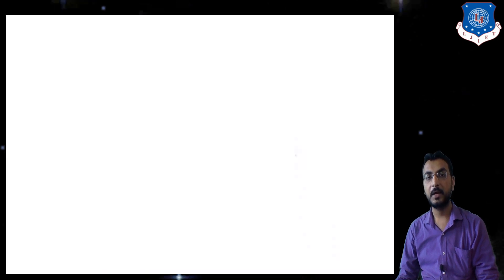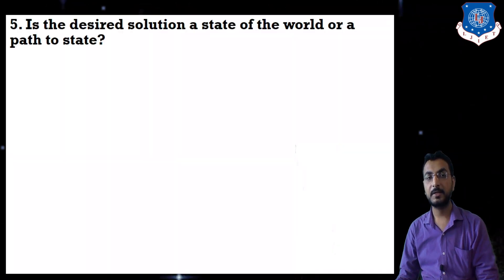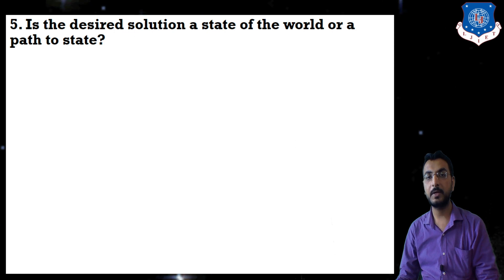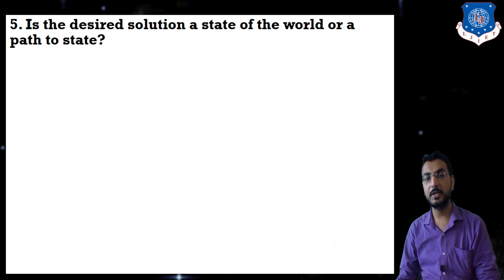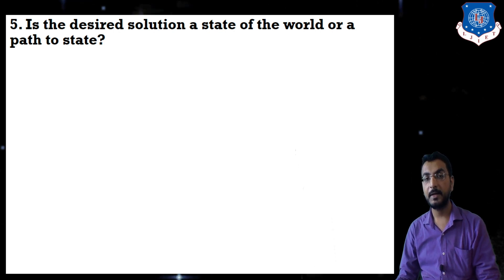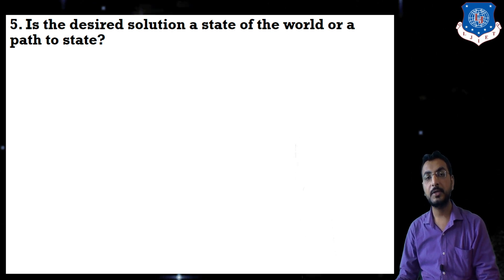Let us start with the fifth problem characteristic: is the desired solution a state of world or a path to a state? That means, whatever state we are reaching after applying some operator or rule — is that the final answer, or is it just an intermediate state? This is what we are going to study.